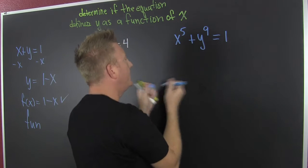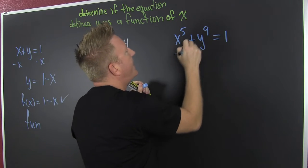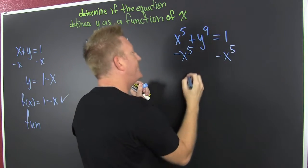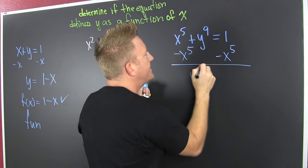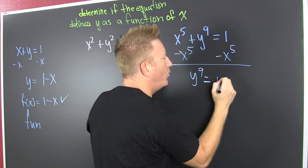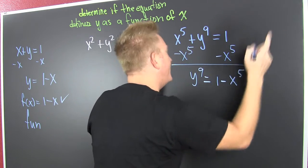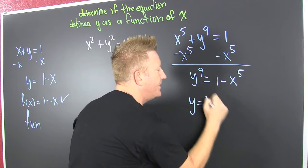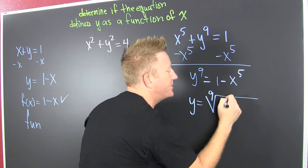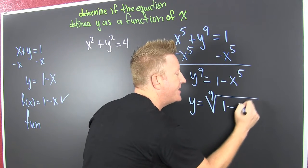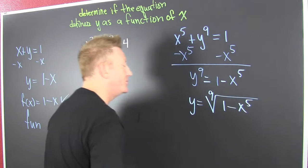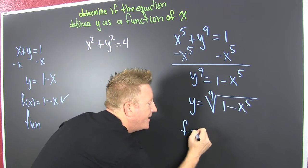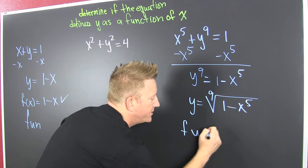Can I solve for y? I go and subtract off that x to the fifth. Now I have y to the 9th, and that's going to be equal to 1 minus x to the fifth. Now I take the 9th root of both sides, so y is equal to the 9th root of 1 minus x to the fifth. Was I capable? Yes, I can — anytime, anywhere. That is a function.